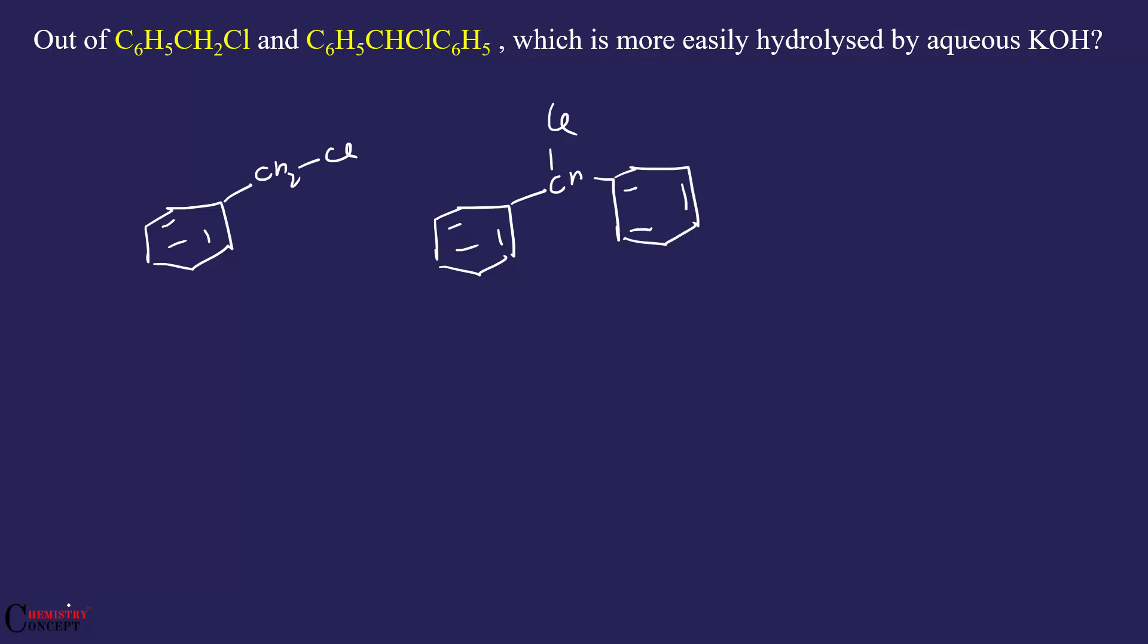Now, they're talking about hydrolysis, which means replacing Cl with OH. After hydrolysis, this one will be forming CH2OH and this one will be forming two benzenes with OH.